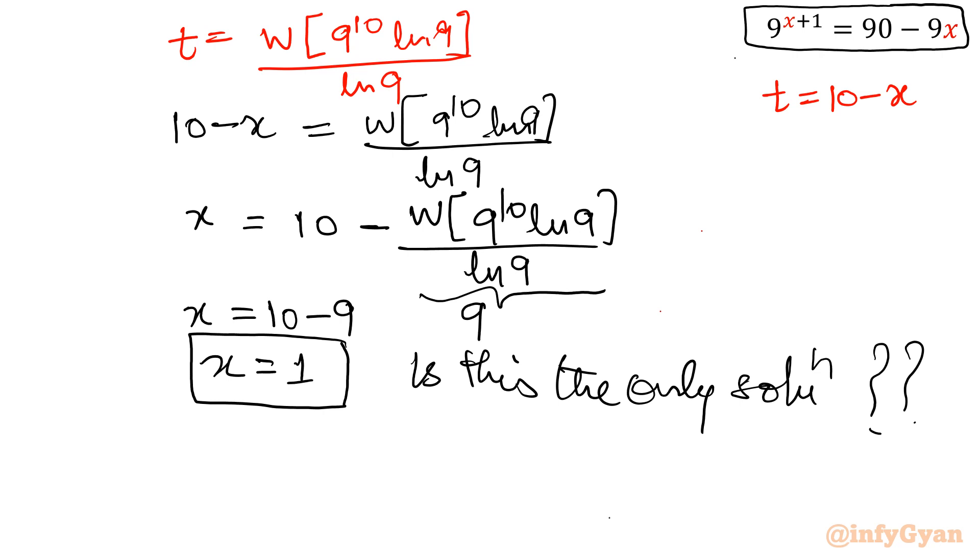If you will see your right hand side is y equal to 90 minus 9x line. If I will try to draw it then line would be like this. Y intercept is 90 gradient is minus 9. This line would be the line 90 minus 9x. Now come to the left hand side.